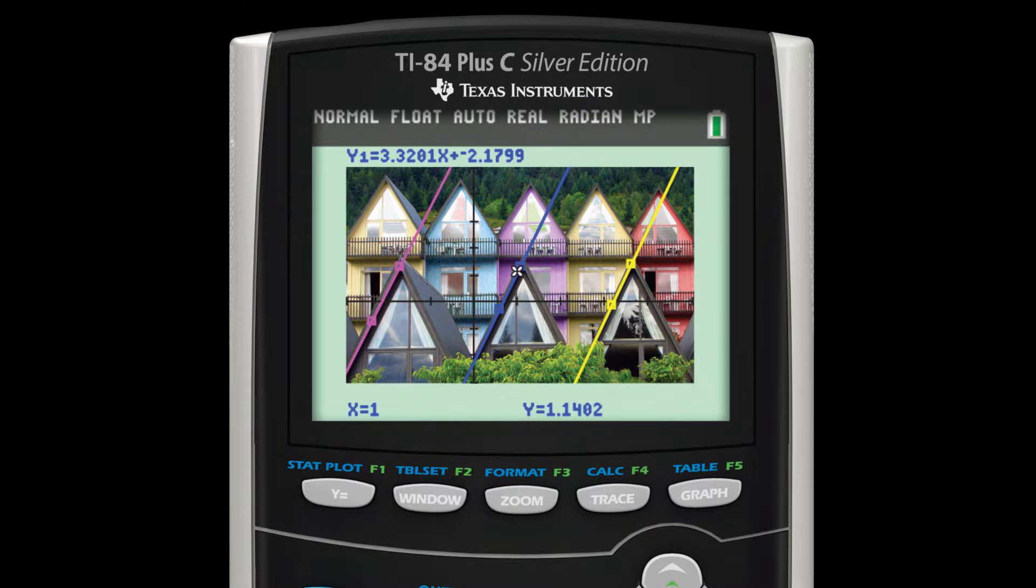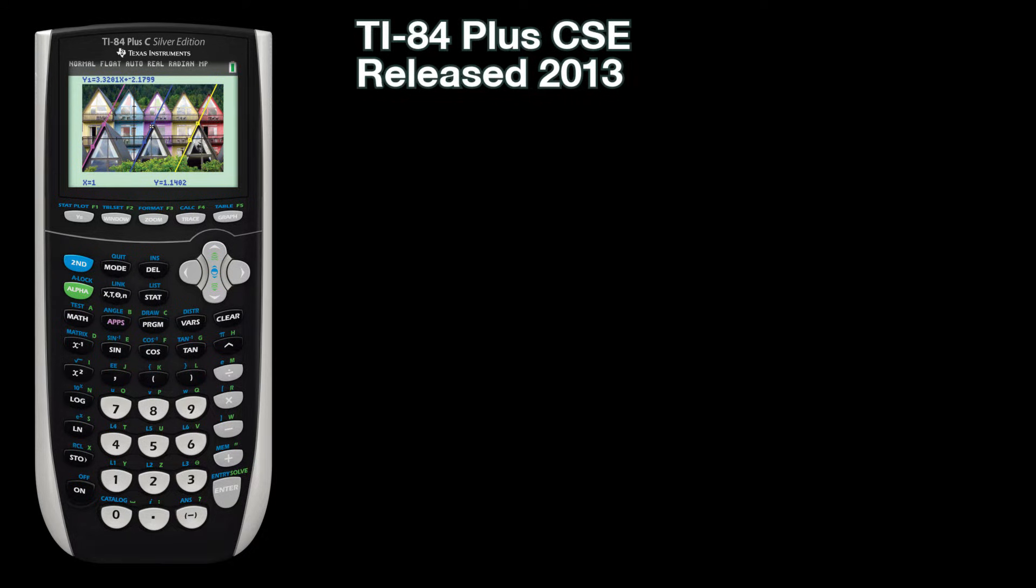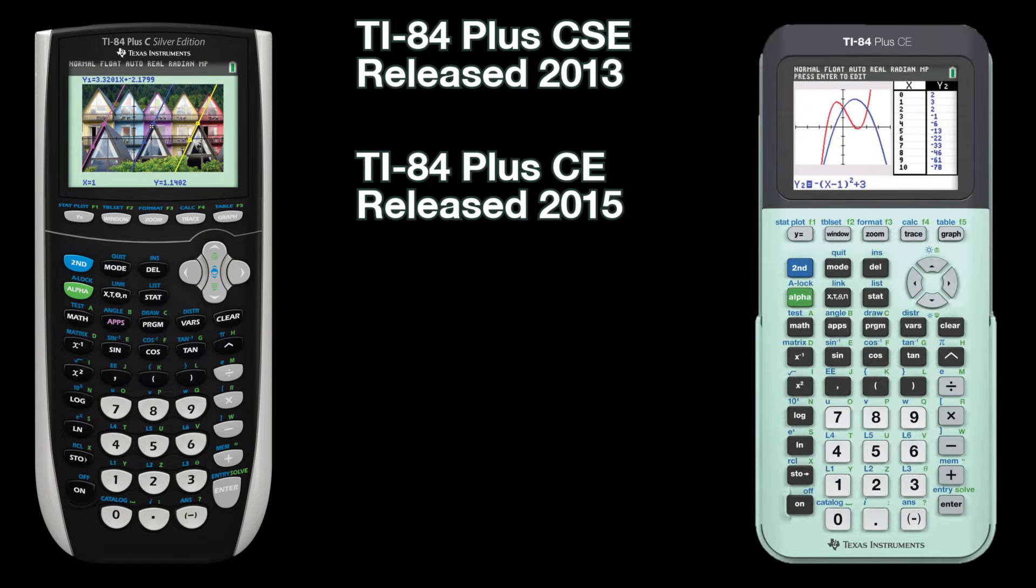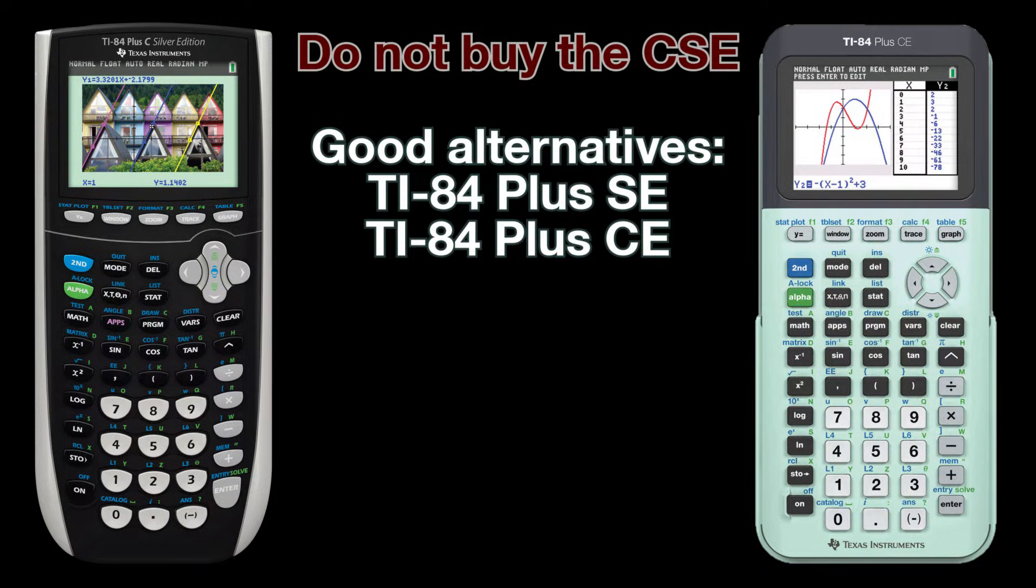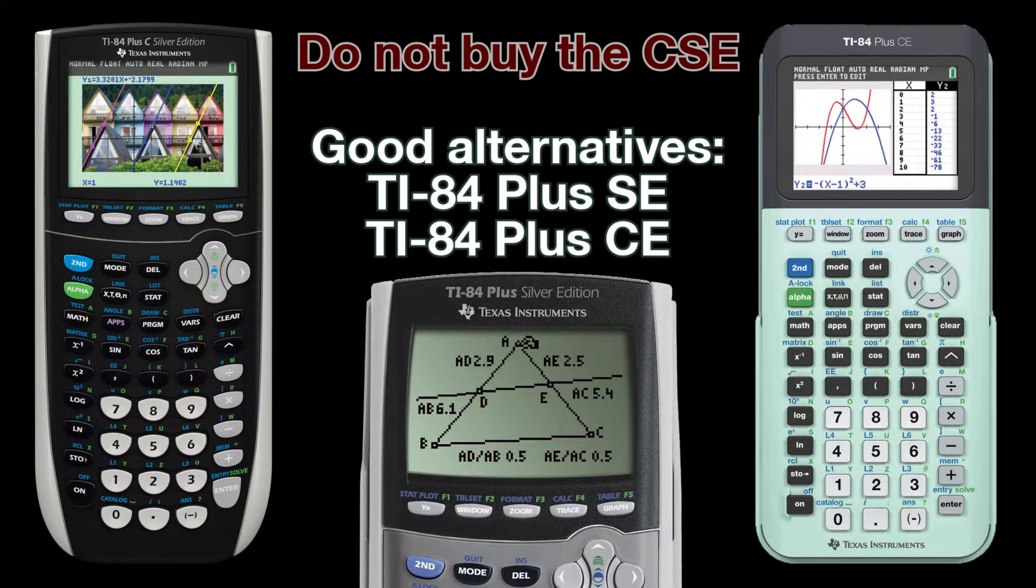They also lack modern software features like updates and useful apps. Another calculator to stay away from is the TI-84 Plus C Silver Edition, or CSE for short. While it was released in 2013 and has a color screen, it was so underpowered, TI quickly released its successor, the TI-84 Plus CE, in 2015 and abandoned the CSE. I would not recommend even buying a CSE used, and instead I would suggest going for a TI-84 Plus Silver Edition, since it's faster and more widely used.